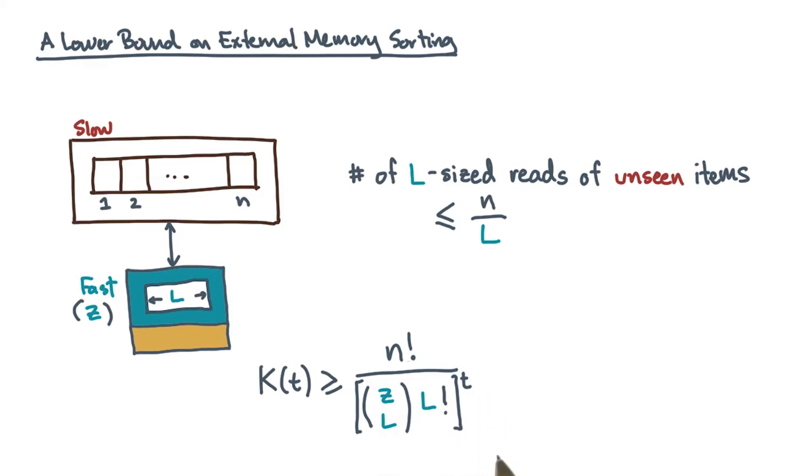Thus, we can refine this estimate of the lower bound on k of t. In particular, l factorial to the t becomes l factorial to the n over l. We're almost done.